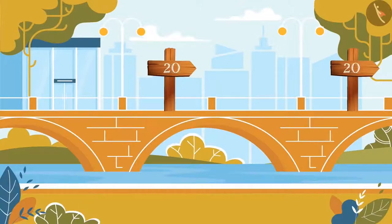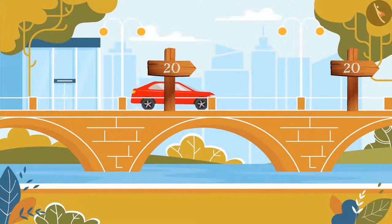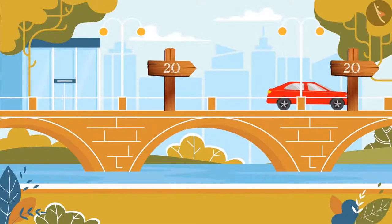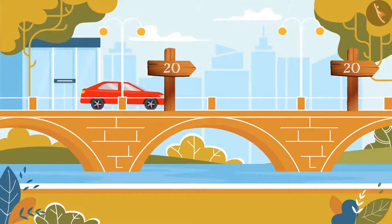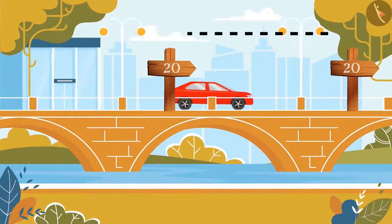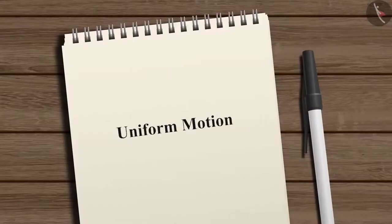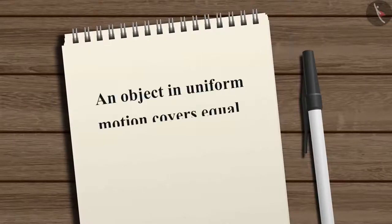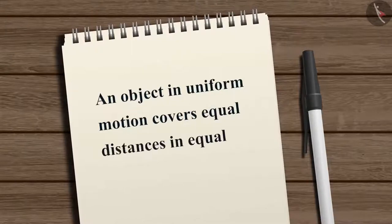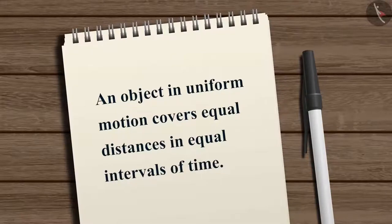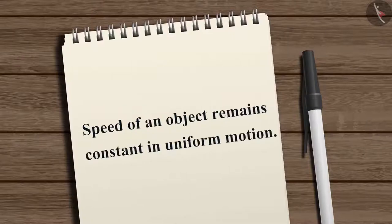Suppose a red car covers 20 meters in the first second, and again 20 meters in the next second, and so on. In these short intervals the car covers equal distances — this type of motion is known as uniform motion. An object in uniform motion covers equal distances in equal intervals of time, and its speed remains constant.